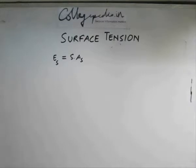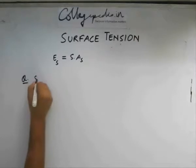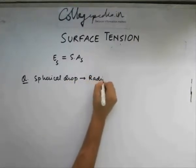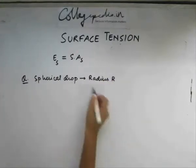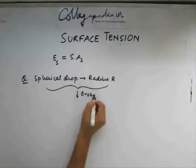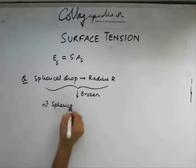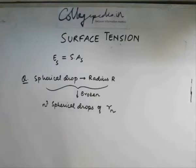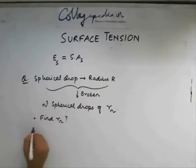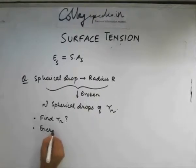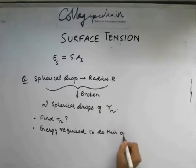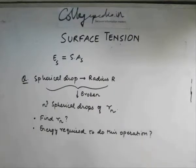Say we have a spherical drop which is of radius r. This is broken into n cube spherical drops of some radius rn. Each drop has a radius of say rn. Our task is find what that rn is and what is the energy that is required to do this operation. This is our question.